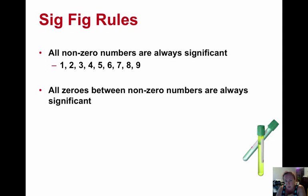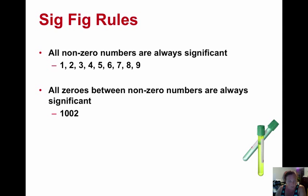If you have a zero, this is where it gets a little tricky. If the zeros are between two non-zero numbers, they are definitely significant. So if you have 1,002, how many sig figs? The zeros are between, so they are one, two, three, four significant figures. Here our zeros are also between digits, so all numbers here are significant: one, two, three, four, five, six significant figures.